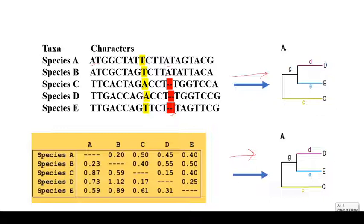It is a bit different from the character-based methods in that the distance-based method does not consider each site individually, but calculates the overall difference between the sequences. The distance-based methods are relatively quicker and faster compared to character-based methods because they deal with the overall data and not with each site one by one. That is why character-based methods are a bit slower compared to the distance-based methods.